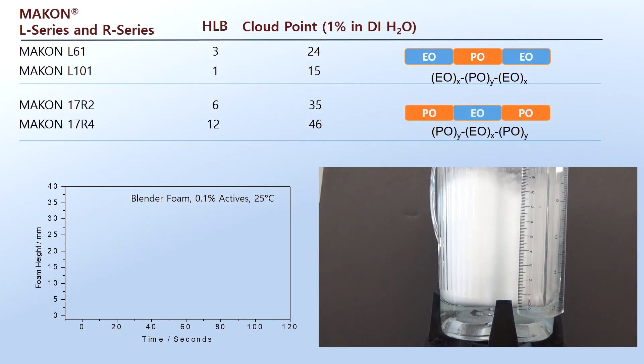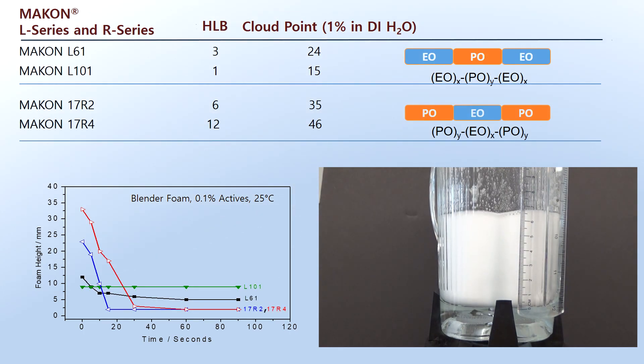Non-ionic surfactants such as Stepan's MAKON ethylene oxide propylene oxide block copolymers can exhibit low foam behavior, particularly when the temperature is above the surfactant's cloud point and the surfactant is of low hydrophilic-lipophilic balance.